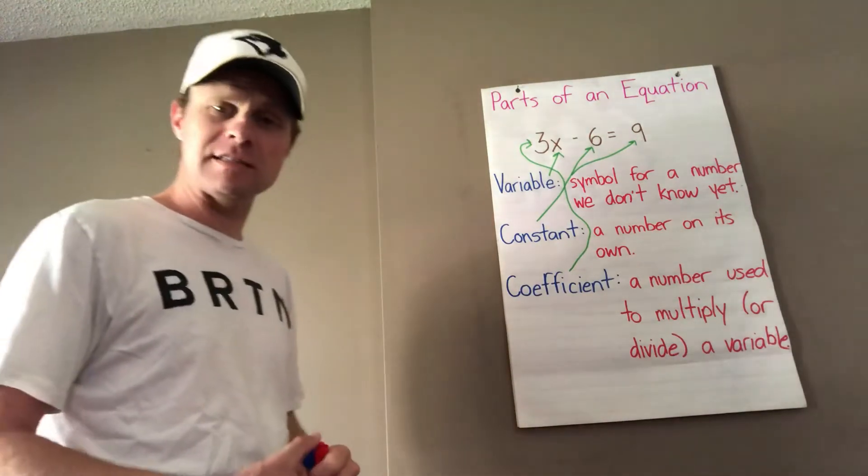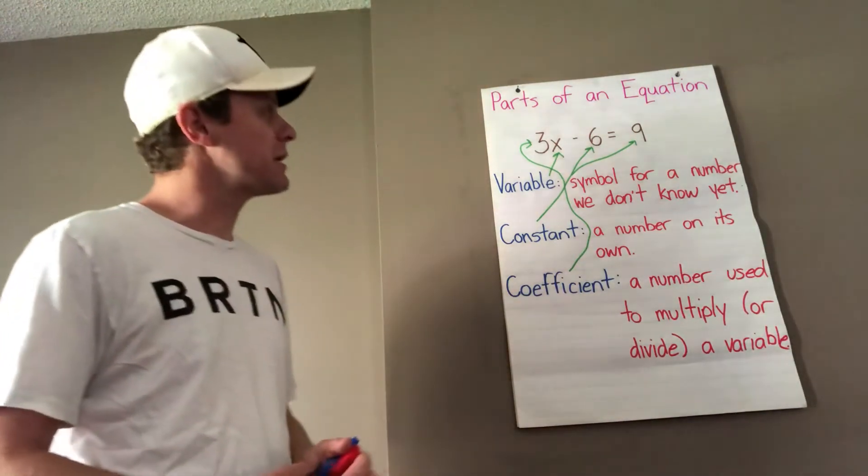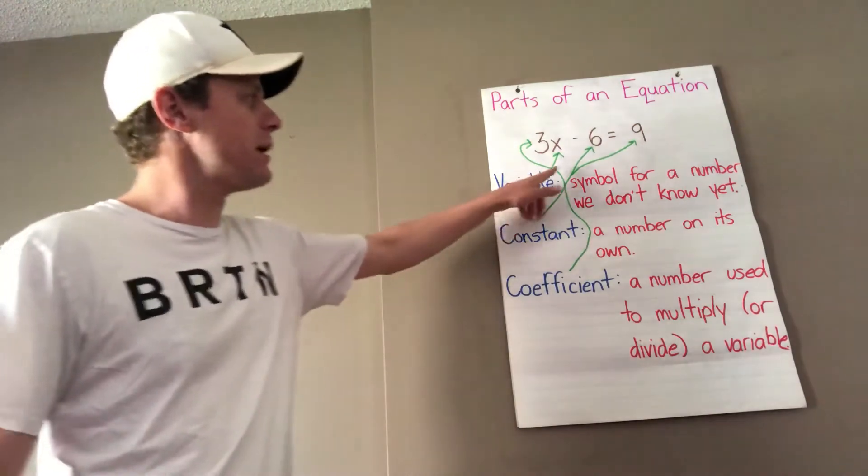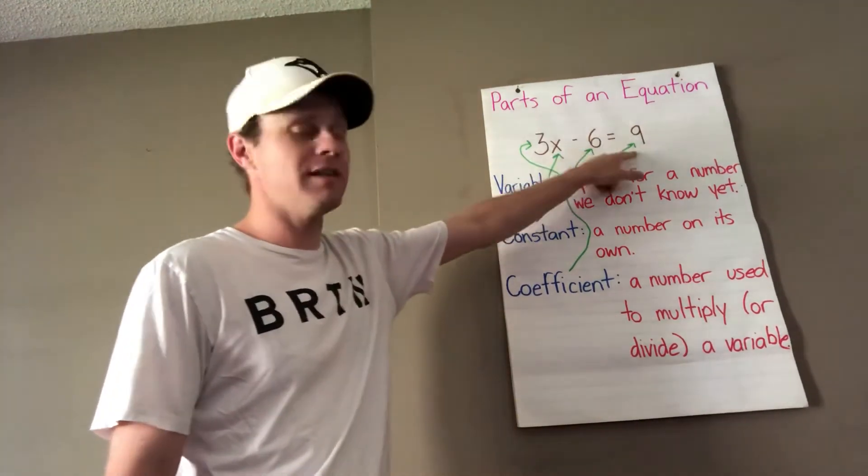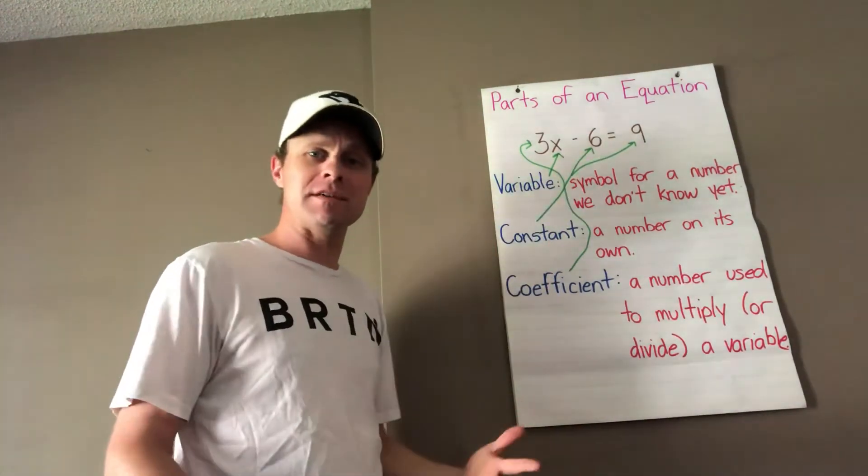The constant is the number that's on its own and we can see that in this equation the 6 and the 9 are constants because they're by themselves.